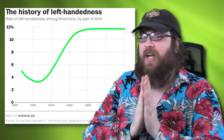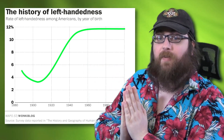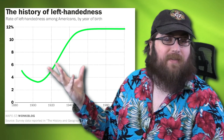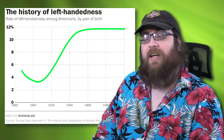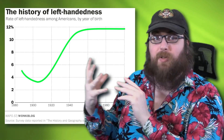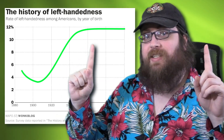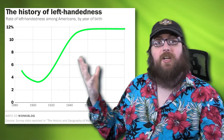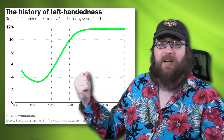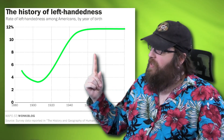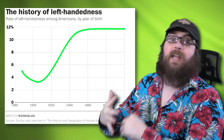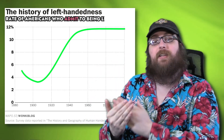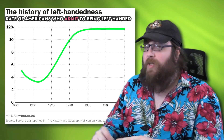Think for a moment about how a scientist would even get this data on hand preference. How would they know if someone was left-handed? The government doesn't exactly track that information — it's not on your driver's license or anything, and you can't really tell which hand someone prefers just by looking at them. The answer is, they asked people. These results come from a survey, because the only way to know for sure what hand people prefer is to have them self-report.